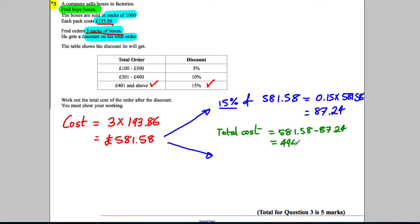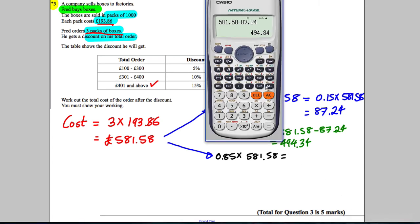So £494.34. That's one way of doing it. There's a quick way of doing it. Remember, you can use percentage multipliers. If you want to work out a 15% reduction, you can multiply the total by 0.85—that is the same as getting a 15% reduction. So 0.85 multiplied by £581.58, with a bit of luck we'll get exactly the same answer. So 0.85 multiplied by £581.58: £494.34.